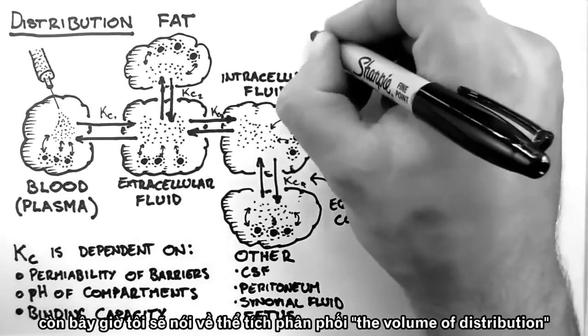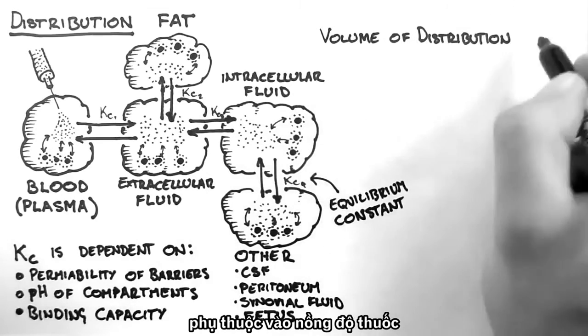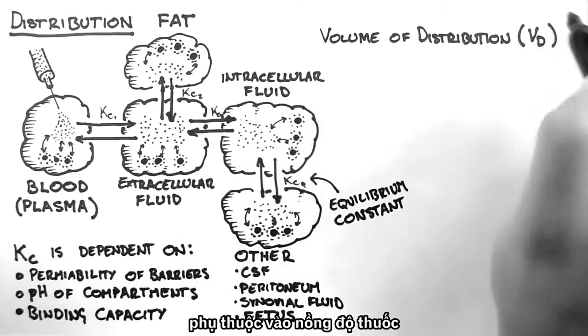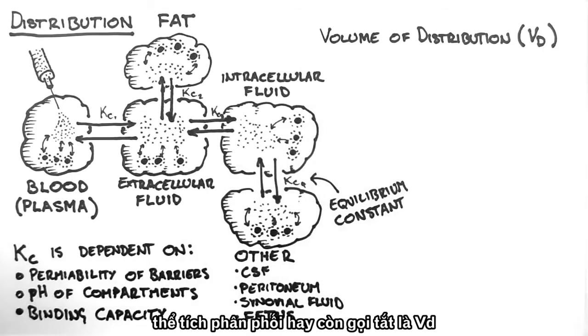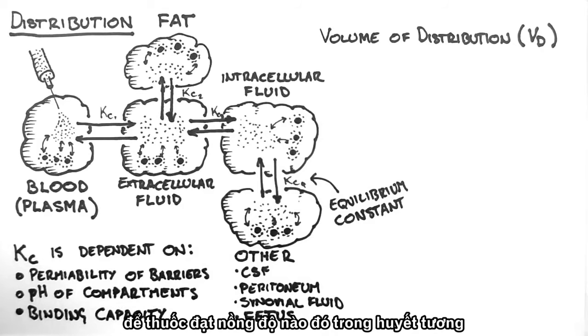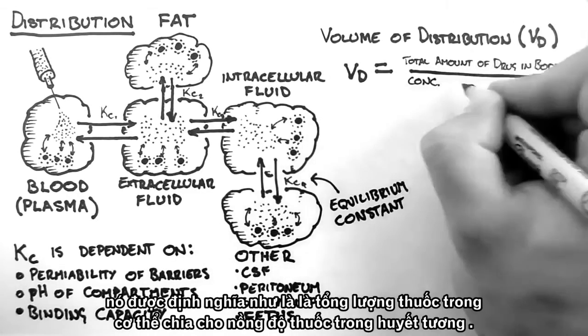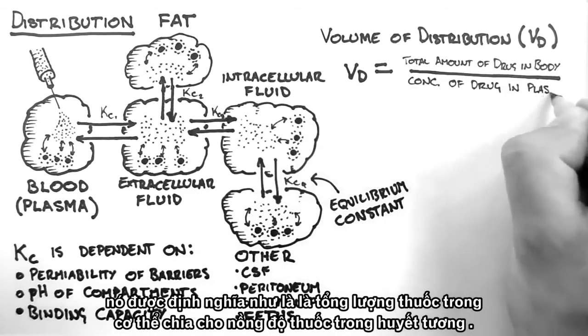Now I'm going to talk about the volume of distribution, which depending on the level of pharmacology you need to know, may or may not be important. The volume of distribution, denoted VD, is a property of the drug which shows how much drug needs to be within the body to get a certain concentration in the plasma. It is defined as the total amount of drug in the body divided by the concentration of drug in the plasma.